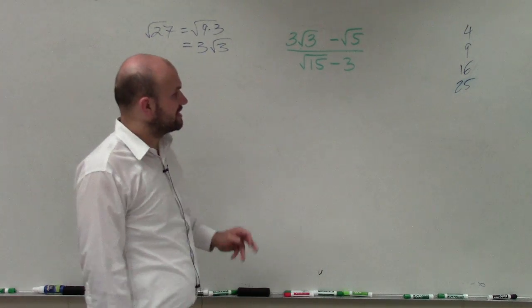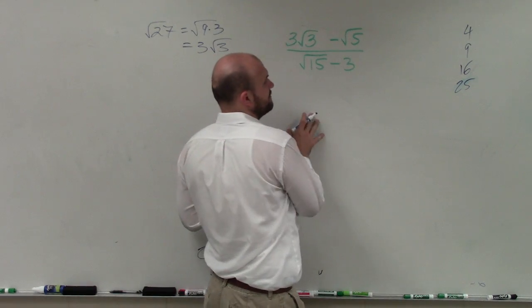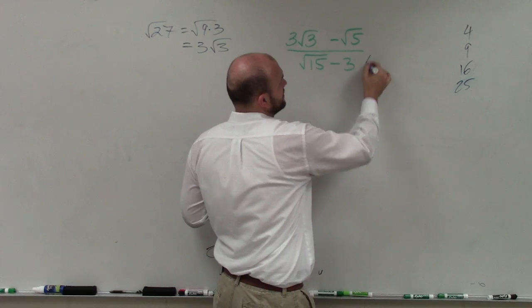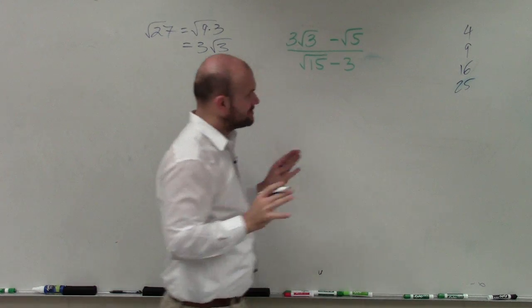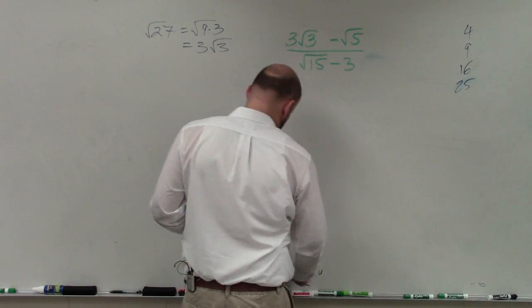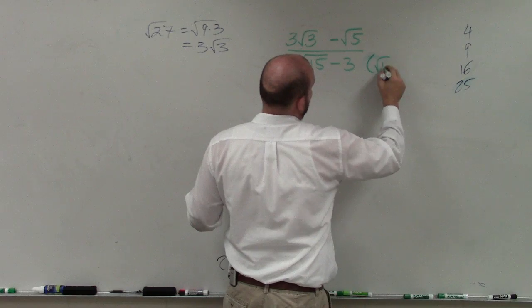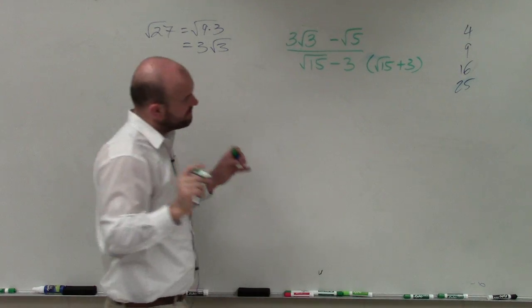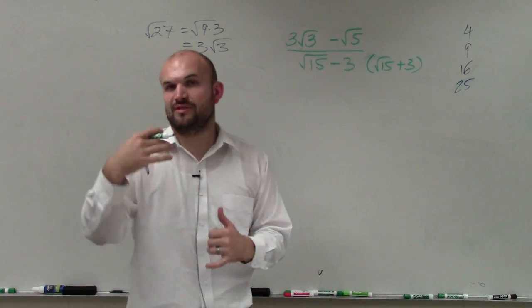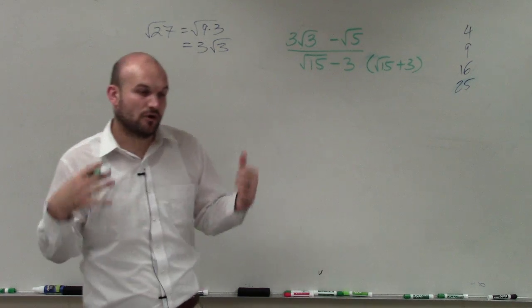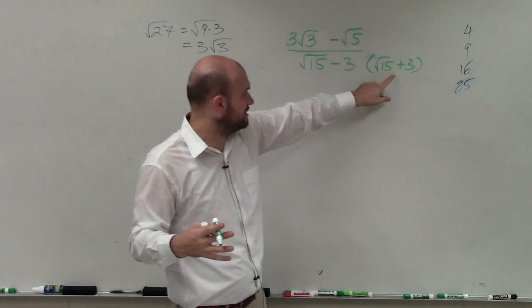Now the next thing I need to do is multiply by my conjugate. The conjugate of the square root of 15 minus 3 — a lot of students make the mistake of saying that's going to be the square root of 15 plus 3. But you've got to be very careful: when dealing with the conjugate, we're dealing with the plus or minus of the square root of 15, or whatever your radical is — not the plain number.